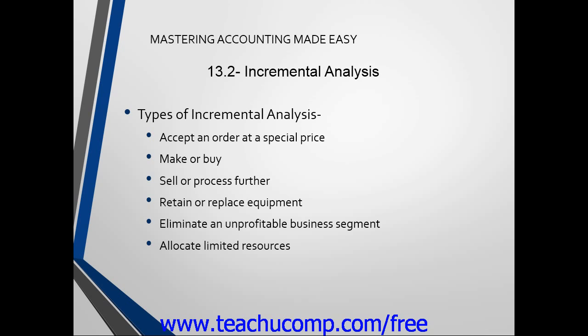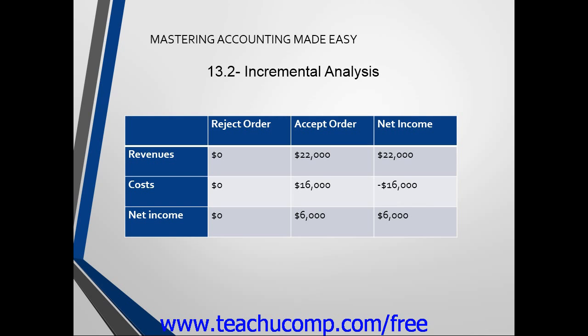Here's an example of a spreadsheet a manager may make when deciding whether or not to accept an order at a special price. Notice that for each course of action, we have revenues, costs, and net income listed. In this example, by accepting the offer, this company will increase its net income by $6,000. Managers can use this analysis to determine if accepting orders at a specific price point is profitable or not.